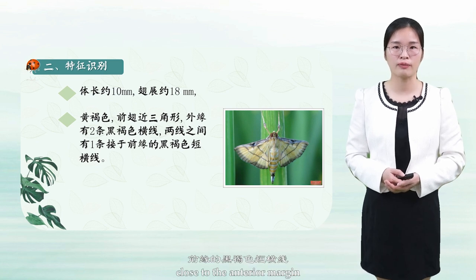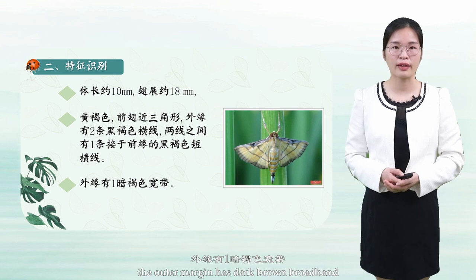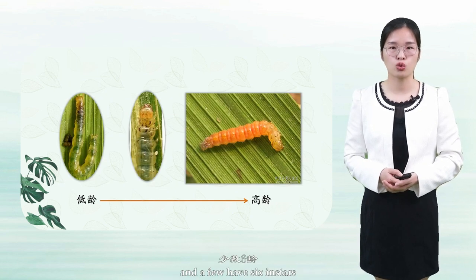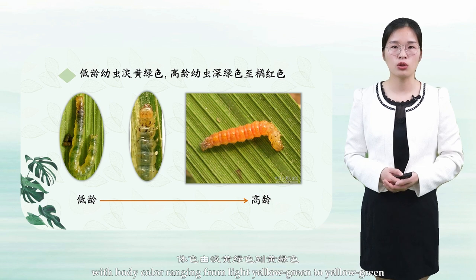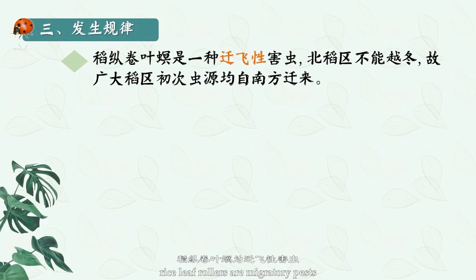The outer margin has a dark brown broadband. The larvae are generally five instars and a few have six instars. Mature larvae are 14 to 19 mm long, with body color ranging from light yellow-green to yellow-green, turning orange-red when mature.